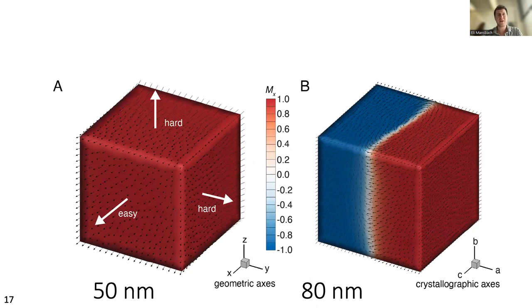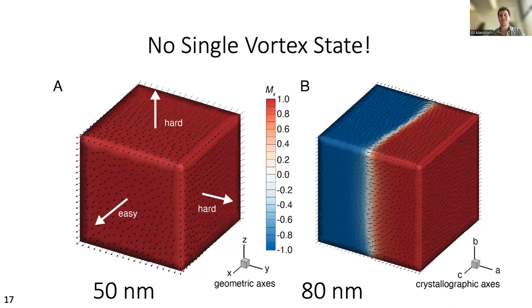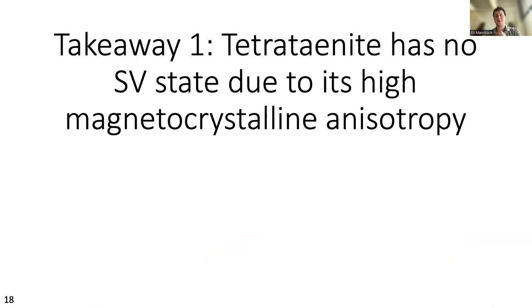Merrill also allows us to find the least-energy state of tetrataenite at a variety of shapes and sizes. For cubes: a 50 nanometer cube is in the single domain state, whereas an 80 nanometer cube is in what I would call a two-domain state where a domain wall runs through the middle. The transition between these two states occurs at 64 nanometers. One of the things that's very different about tetrataenite compared to chamosite and magnetite is that there is no single vortex transition — mostly due to the very high magnetocrystalline anisotropy that tetrataenite has.